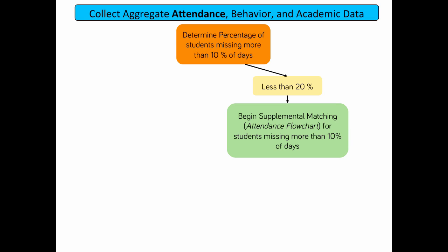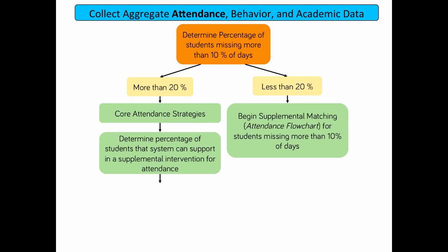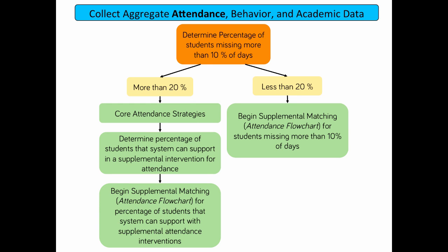If the percentage of students who have missed more than 10% of school days is greater than 20% for the grade or school, it is recommended to examine and adjust core attendance strategies before determining the percentage of students an attendance supplemental intervention system can support. In this scenario, the school will be intervening at the core level with core attendance strategies, as well as intervening with a supplemental intervention.